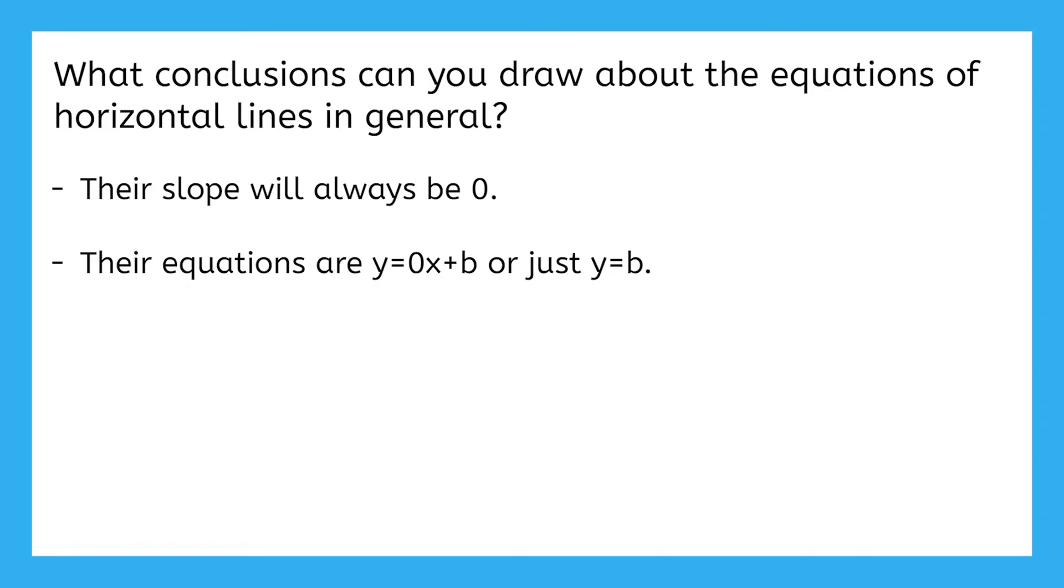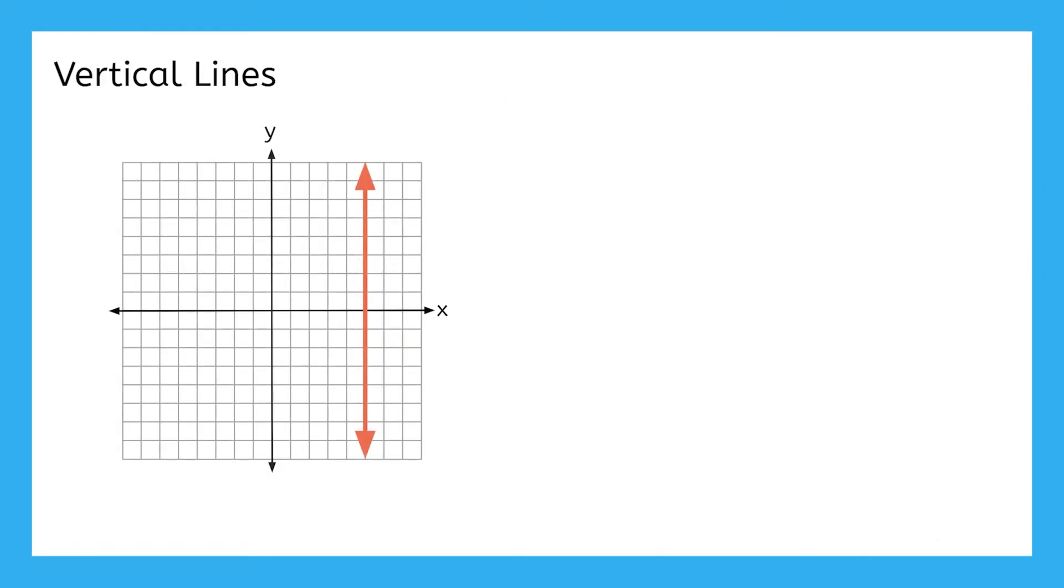Let's try a vertical line next. Pause the video here and try to write the equation of this line. I'm seeing two issues here that might have caused you to get stuck. We've been writing the equation of a line using its slope and its y-intercept so far. The first issue here is that this line doesn't have a y-intercept, because it doesn't go through the y-axis at all.